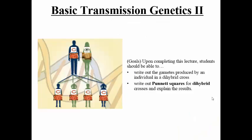That's Basic Transmission Genetics 2. Make sure you can write out gametes for a dihybrid cross, know how to use FOIL, and know how to execute a Punnett square, predict offspring, and work completely through a dihybrid problem.